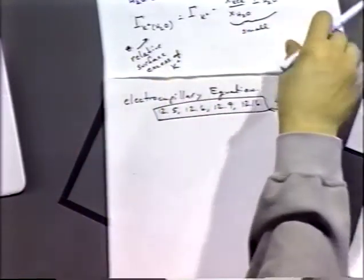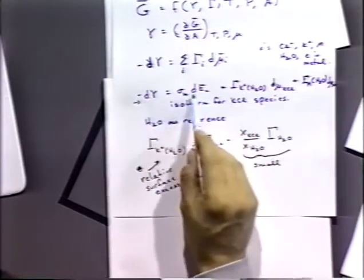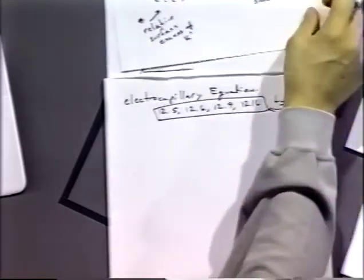So let's look again at our electrocapillary equation. And what we see is we have the surface tension, derivative of the surface tension versus the electrode potential.